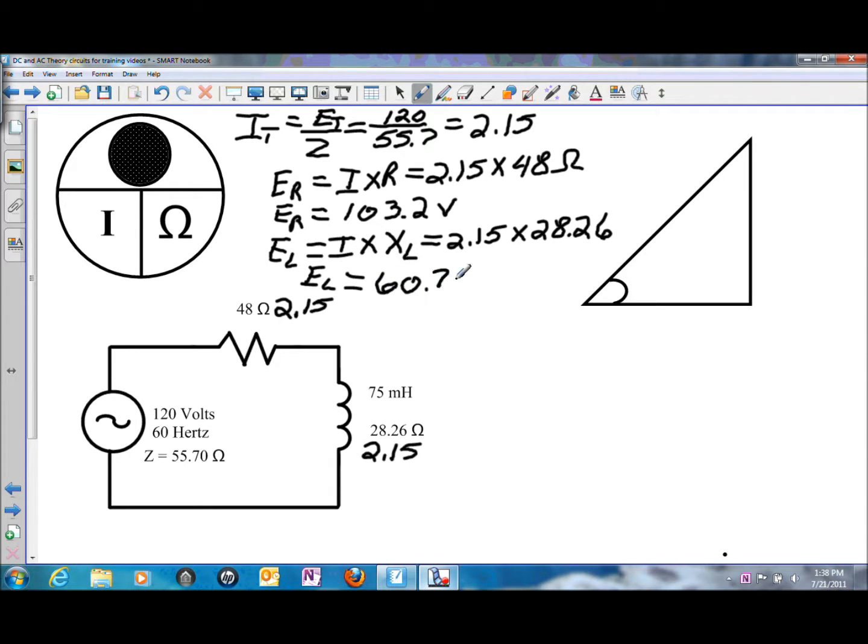Once again, this value is a little bit of an approximate, just like the voltage drop on the resistor, and that's all based upon how far we have carried out beyond the decimal point for the current flow. If you look at the two values and you were to just simply add them together like what was done in a DC circuit, the 103.2 volts of resistor voltage plus the 60.759 volts of reactive voltage would be well above the source voltage of 120 volts.